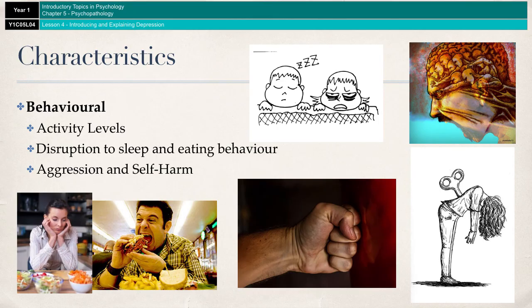Appetite is something that is also very often affected. Some people might have a reduced appetite and not want to eat very much at all, whereas other people might eat considerably more than they would usually eat — so, again, you've got changes in activity levels. On a final note, sufferers of depression might experience quite high levels of aggression and might even experience self-harm as well.